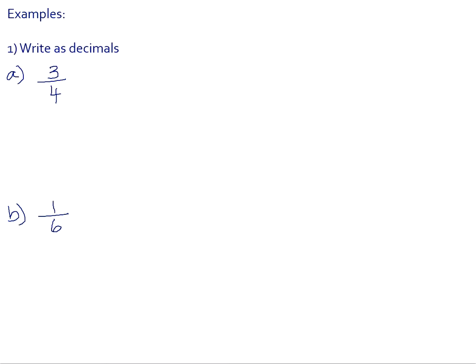Let's start off with some revision. When you want to write a fraction as a decimal, always look at the denominator of the fraction. If that denominator is a factor of your powers of 10 — so 10, 100, 1000, 10000, etc. — then if those numbers can be divided by your denominator, your job is a little bit more straightforward.